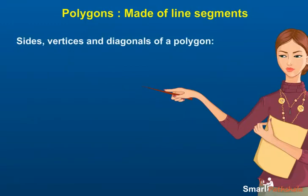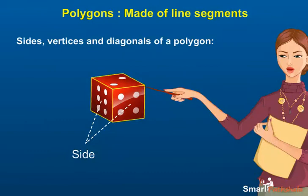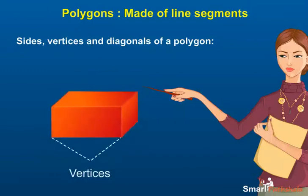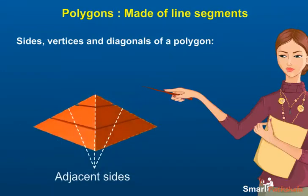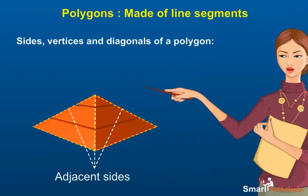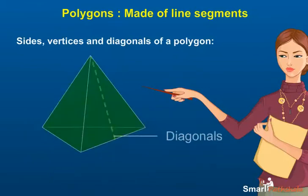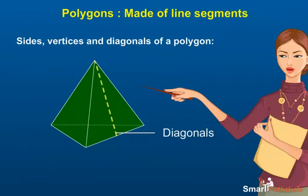Sides, vertices, and diagonals of a polygon. Sides: the line segments forming a polygon are called its sides. Vertices: the meeting point of a pair of sides of a polygon is called its vertices. Adjacent sides: any two sides of a polygon having a common end point are called its adjacent sides. Diagonals: a line segment joining two non-adjacent vertices of a polygon is called its diagonal.